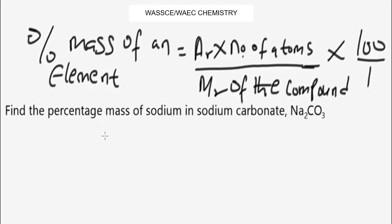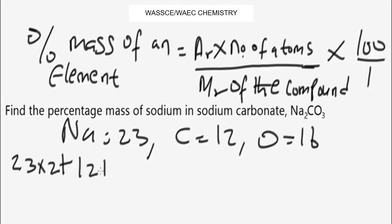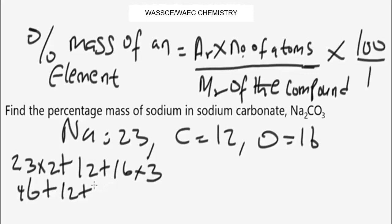Let's apply this to a typical example: find the percentage by mass of sodium in sodium carbonate, Na₂CO₃. Given: Na = 23, C = 12, O = 16. First, find the molar mass of Na₂CO₃: 2 × 23 + 12 + 3 × 16 = 46 + 12 + 48 = 106 grams per mole.